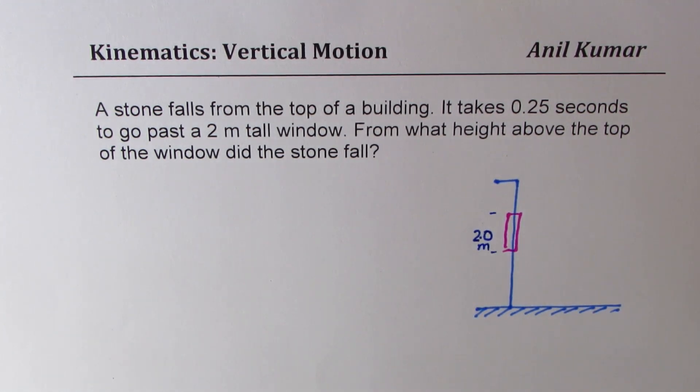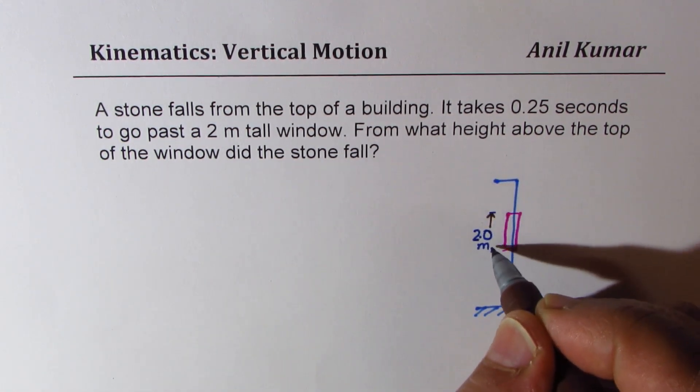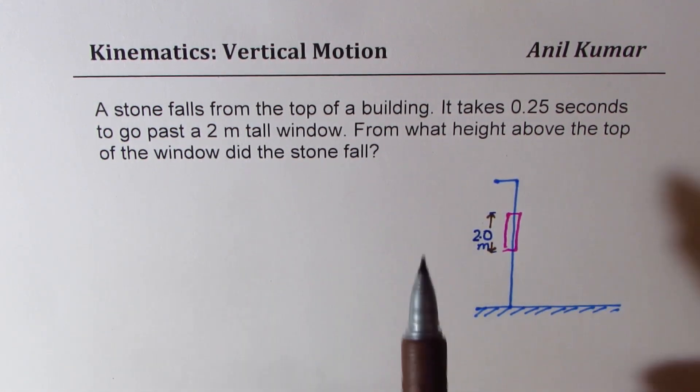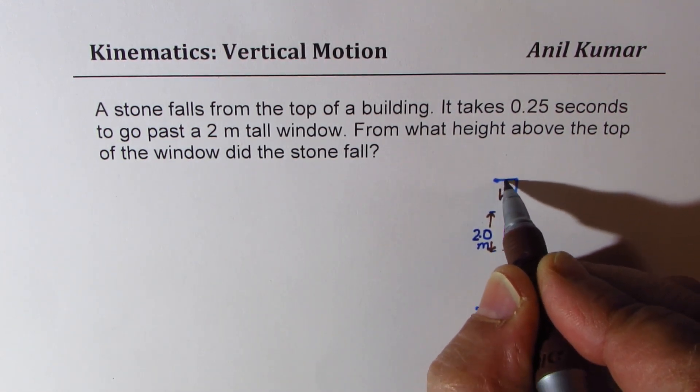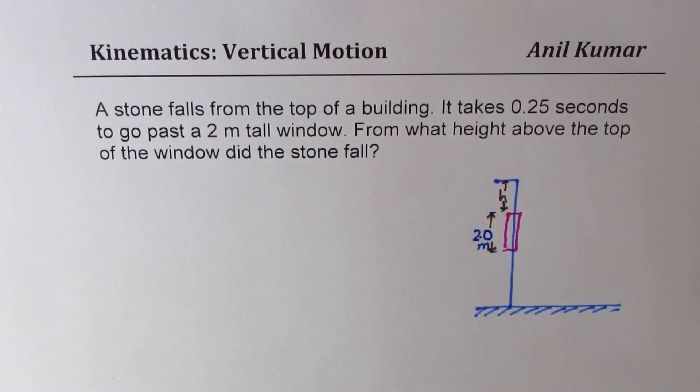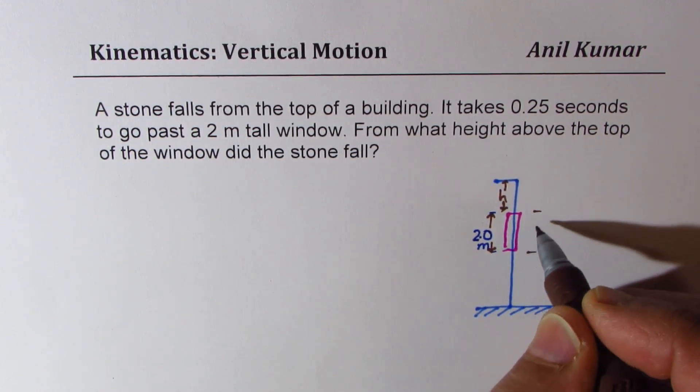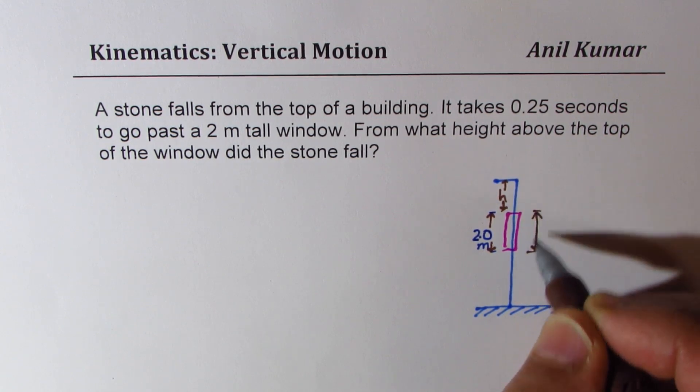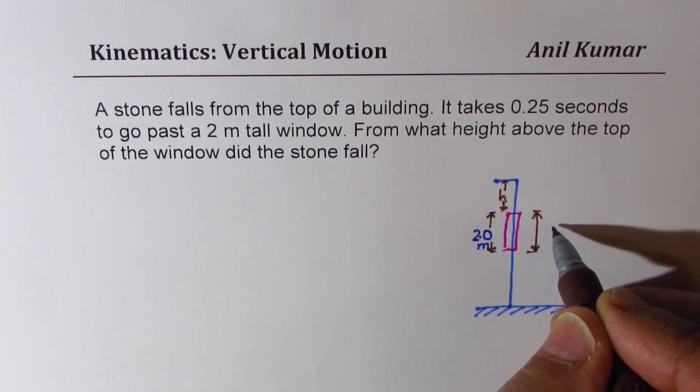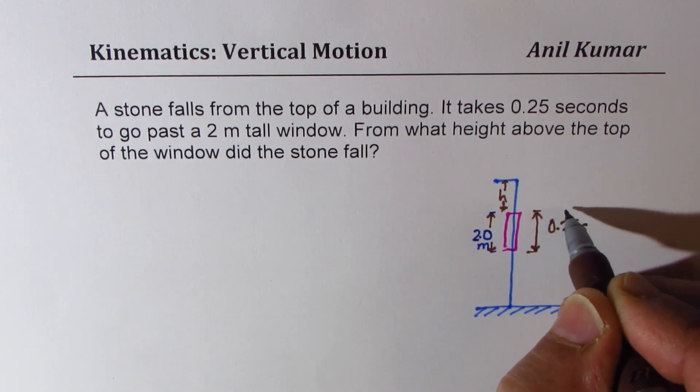What do we need to find? We need to find the height above the window. What we are given is the time which it takes to fall during this distance, which is 0.25 seconds. That is the change in time, delta t.